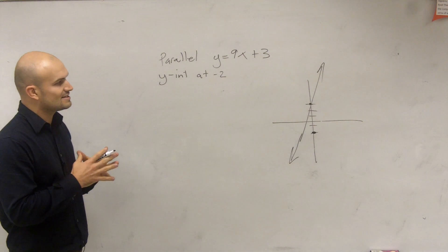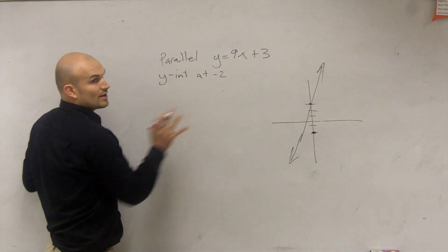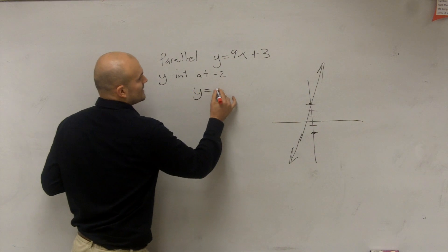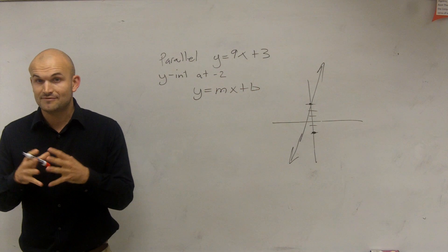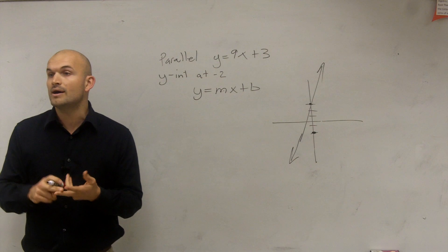So what we need to do is we need to say, all right, we need to create a new line, which is going to be y equals mx plus b. And remember, when we were talking about that, we have to create our slope and our y-intercept.